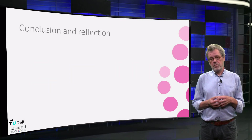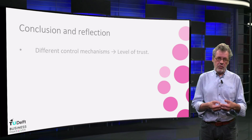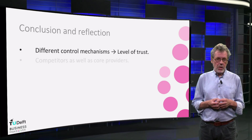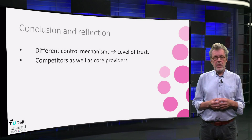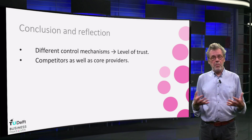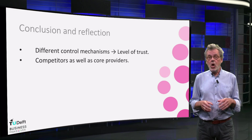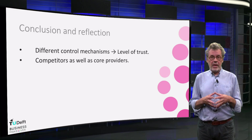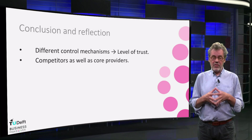In conclusion, the different control mechanisms are related to the level of trust you have in your partner. When discussing the way you work with your ecosystem partners, be aware that they are competitors as well as core providers. Know that keystone players are more successful and that your management style has to be adjusted.